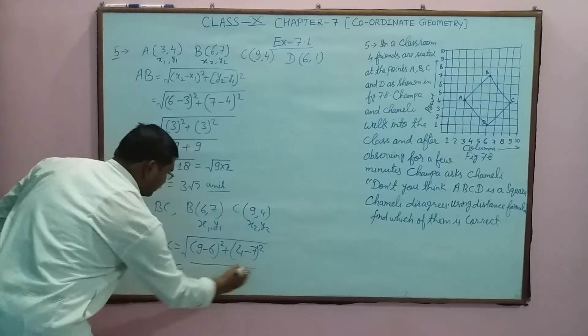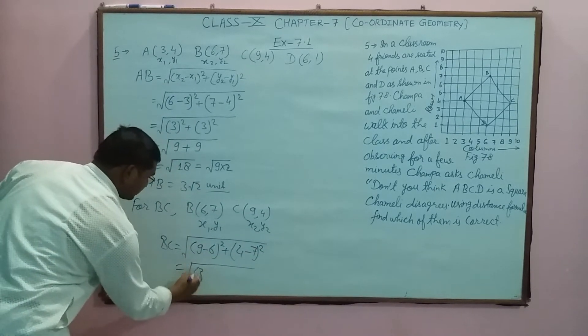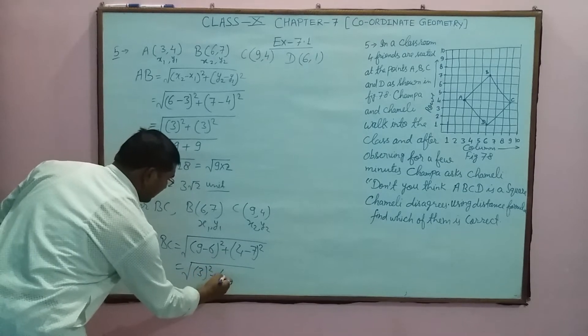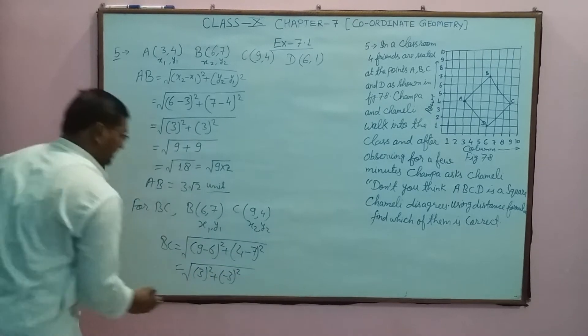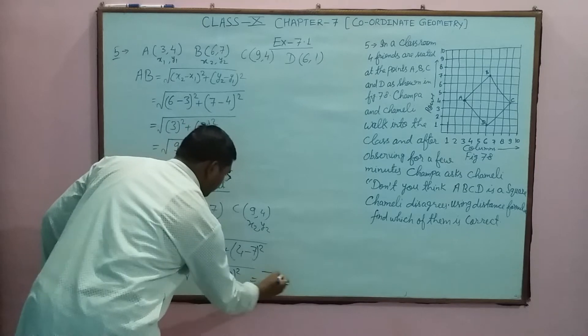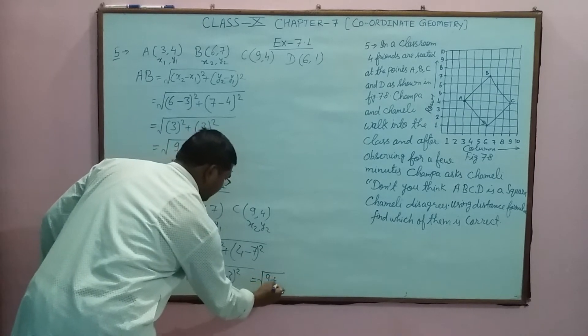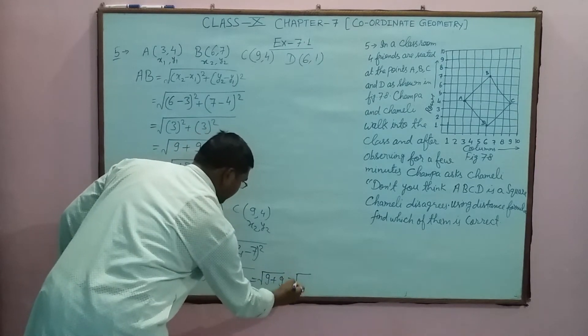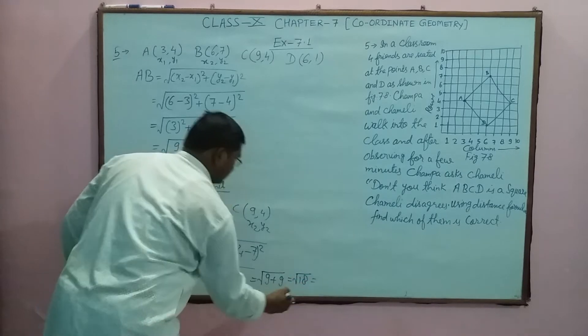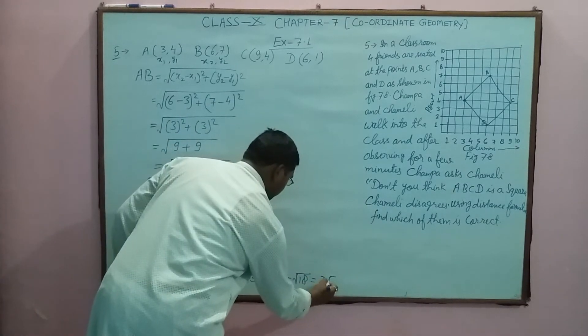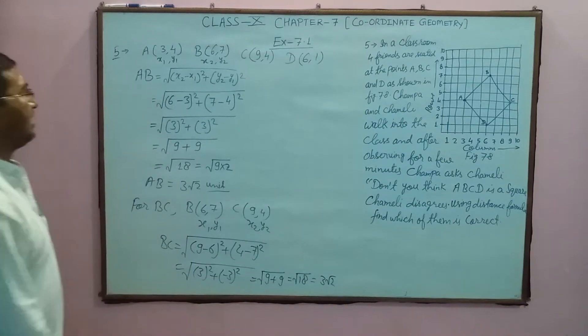Now square root: you will find 9 minus 6 is 3, square of 3, plus square of minus 3. So what does it become? Root 9 plus 9 equals root 18, that is 3 root 2. BC is 3 root 2.